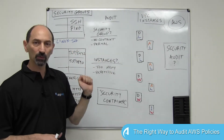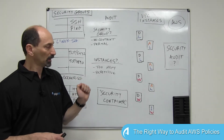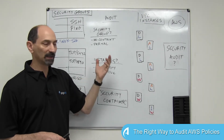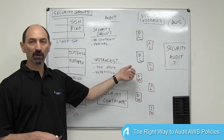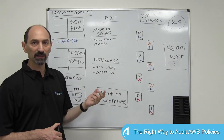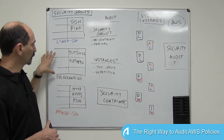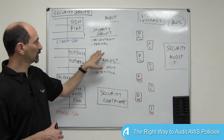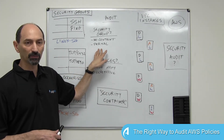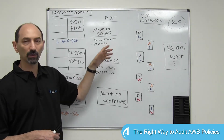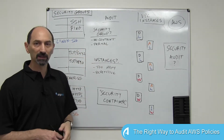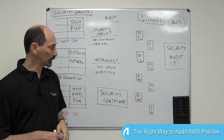And if you want to understand what your security stance is, you really need to look at the combination of all the security groups associated with an instance. If you just look at a security group in isolation, you're getting a partial view of the security stance and you don't have context. So this is not the ideal way to do a security review.